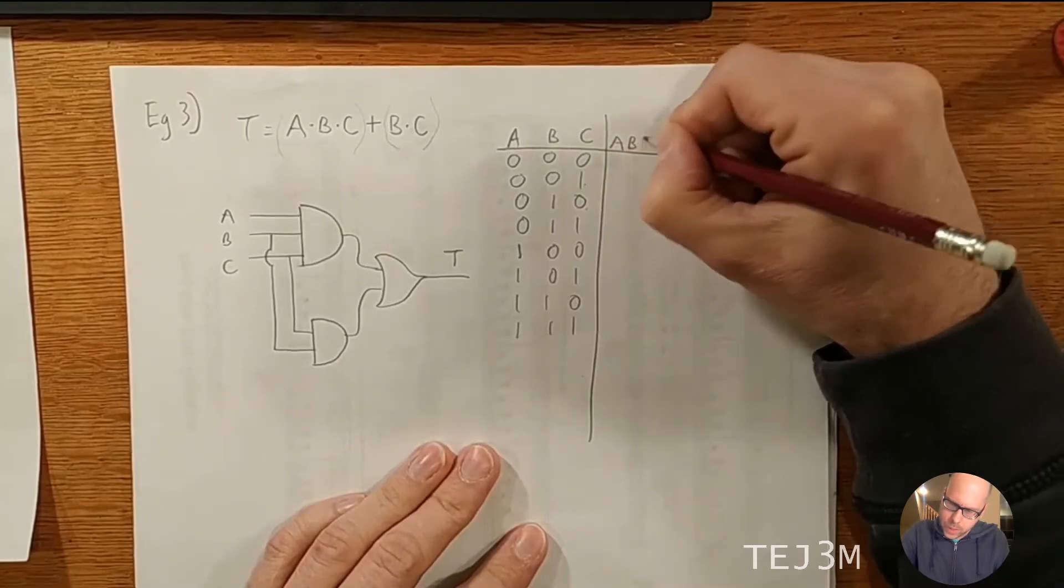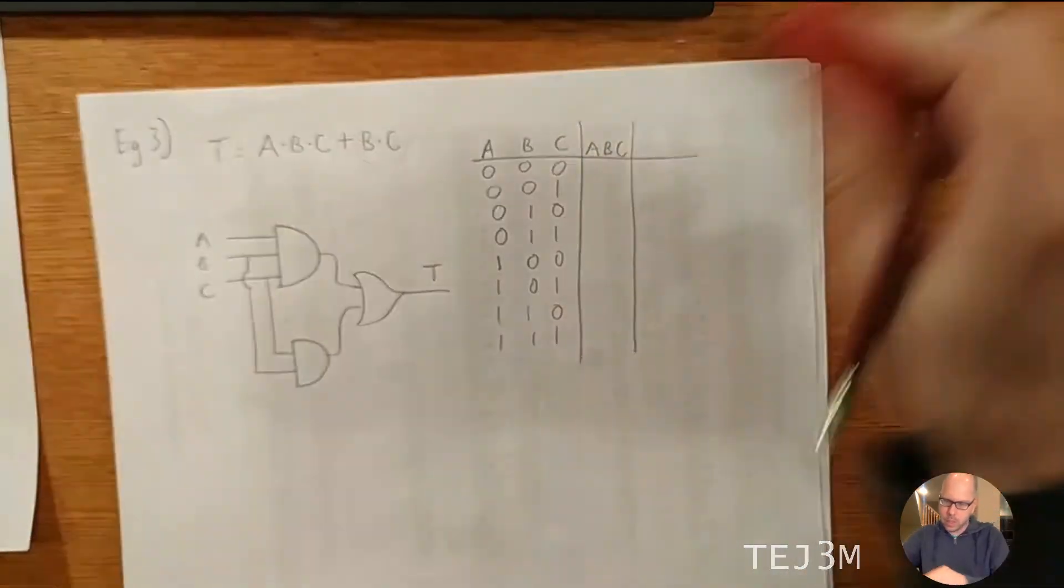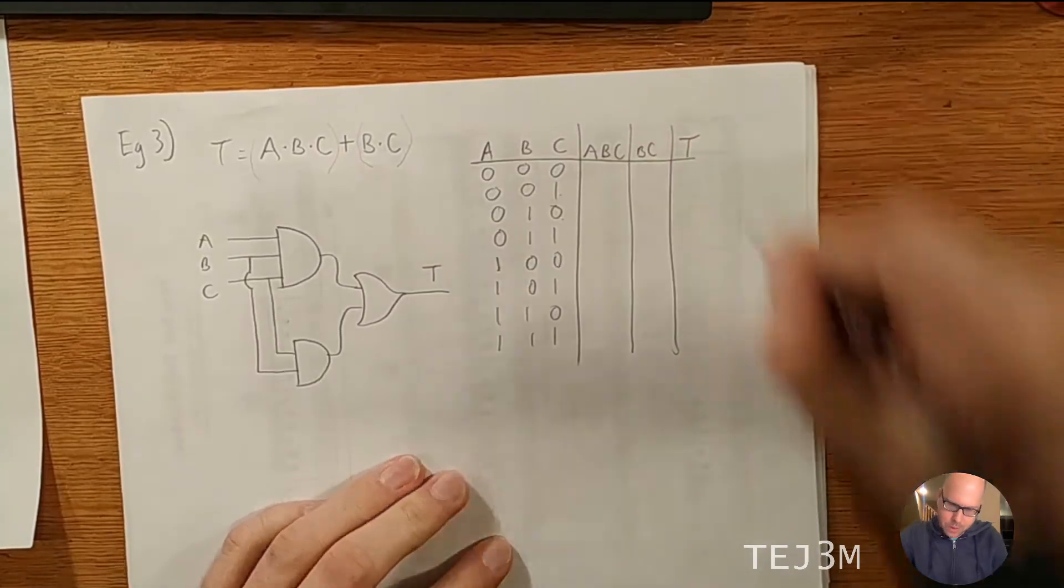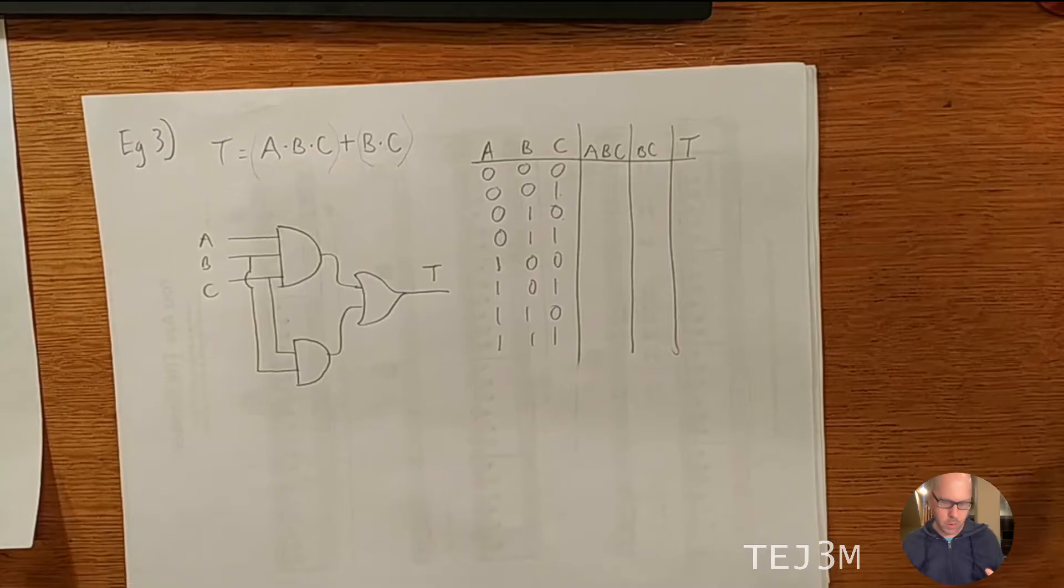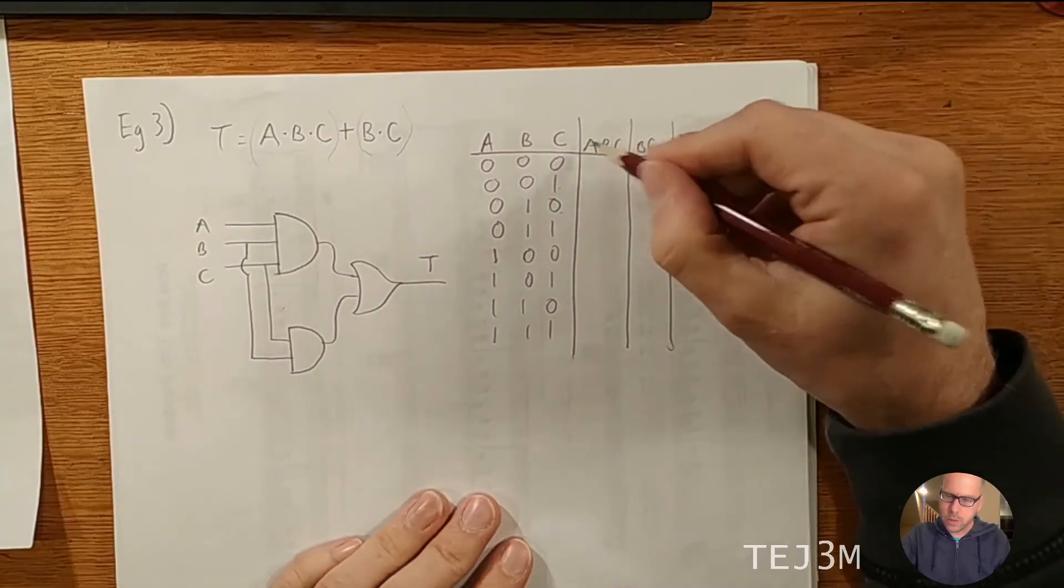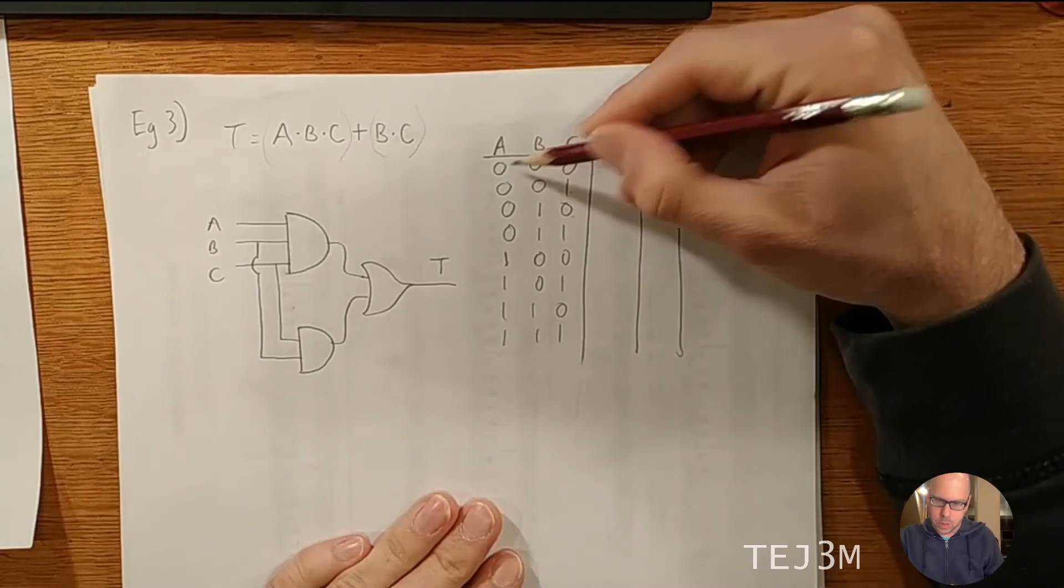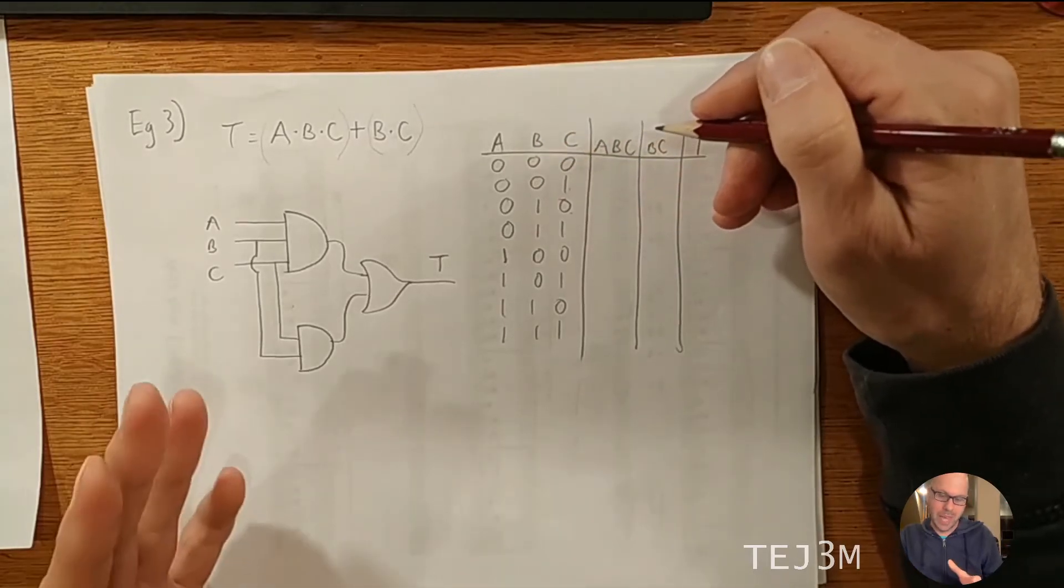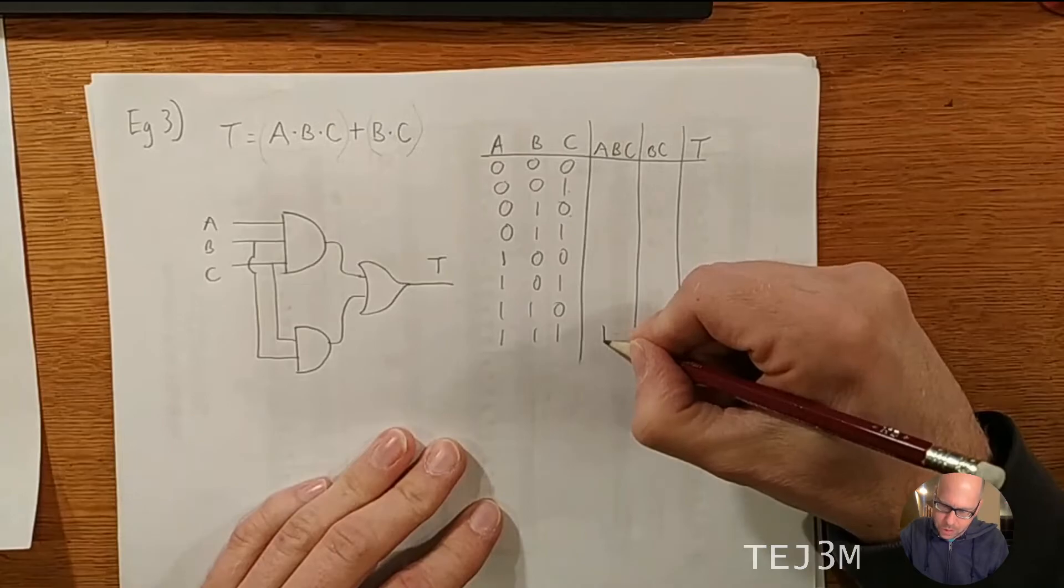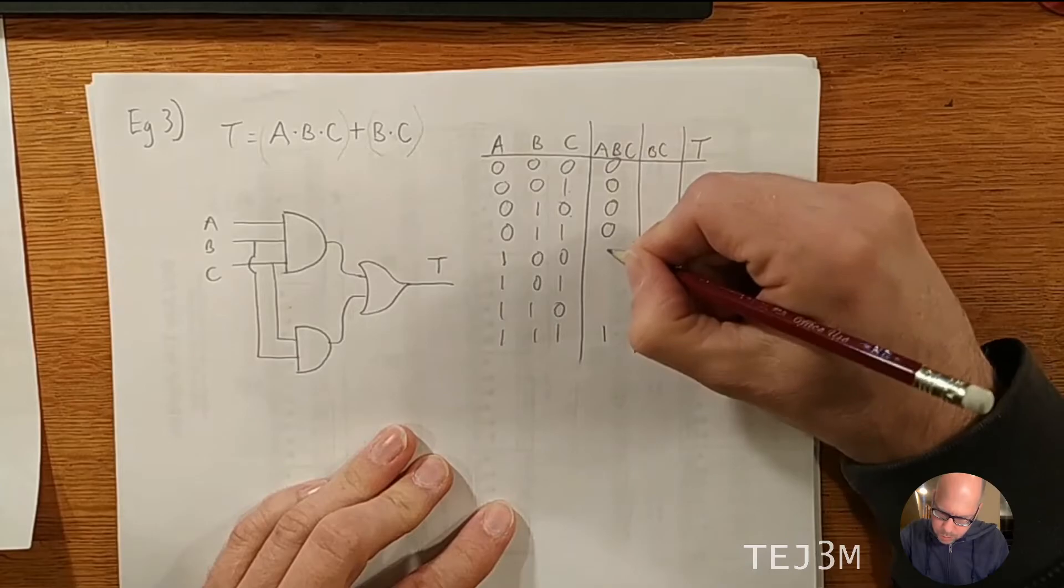So we're going to have A, B, C as that intermediate column. And then we're going to have B, C, and then T. You could skip to T if you wanted to. There's another way of doing this. I'm just going to do it, and then I'll show you the other way that you may prefer in some situations. Okay, so A AND'ed with B AND'ed with C. All I'm going to do is look at my inputs. Zero, zero, zero. Well, that's like multiplication. Anyway, the only time that you're going to get a one in this column is if all the inputs are a one. So that's the only time we're going to get a one. Everything else is going to be a zero. Just like multiplication or times.